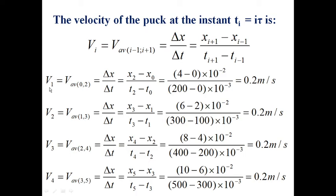V1, for example, equals X2, X after minus X before, over T after minus T before. We replace their values. This 10 to the power negative 2 is to convert from centimeters to meters. This 10 to the power negative 3 is to convert from milliseconds to seconds. Now V2: X after minus X before, T after minus T before. We conclude that the velocity of the object doesn't change. The velocity remains constant.